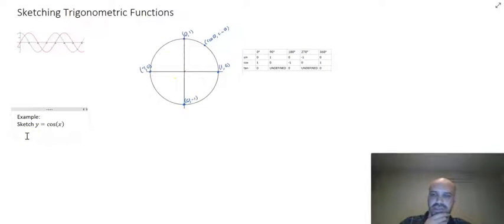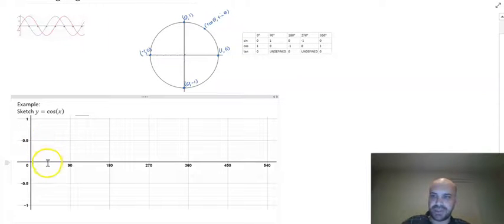All right. Now, I'm going to sketch y equals cos x. I'm going to create an x and y Cartesian plane. Something that looks like this. Now, you're going to have to do that by hand. Increments of 90 degrees, at least for this one. In future ones, we'll have to use different increments. And we're going up to 1 and down to negative 1.